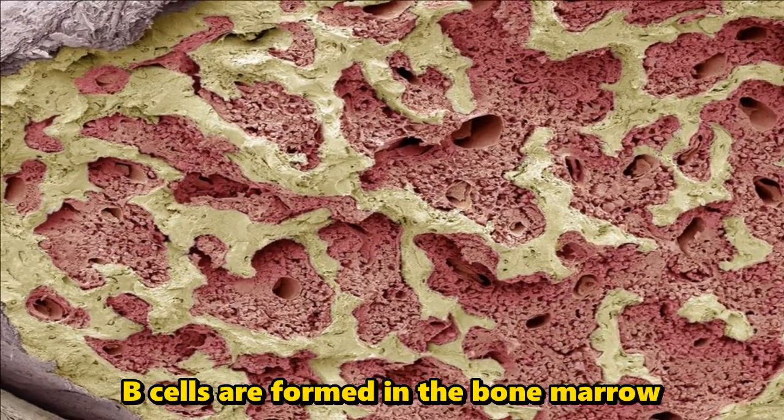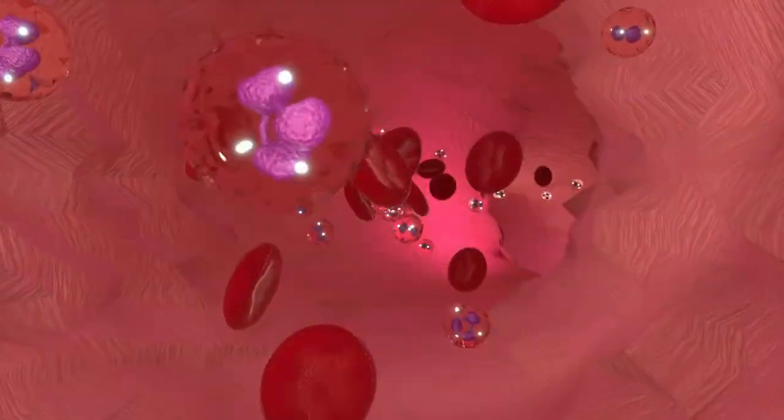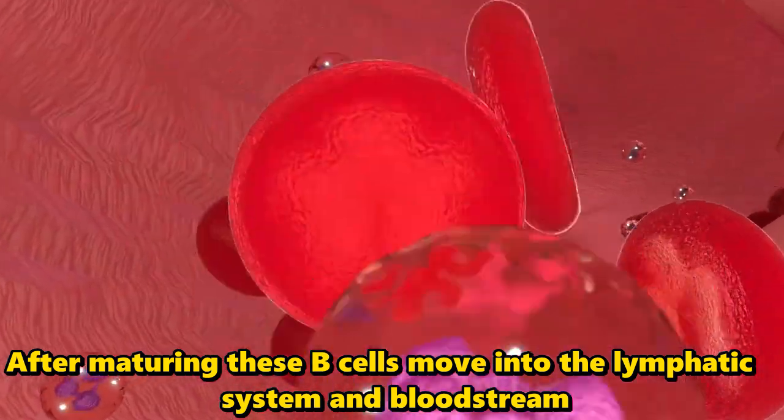B cells are found in the bone marrow. After maturing, these B cells move into the lymphatic system and bloodstream.